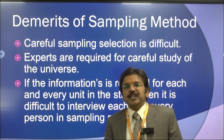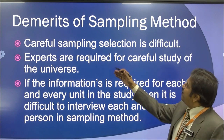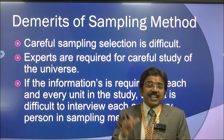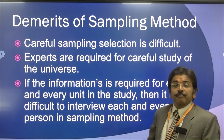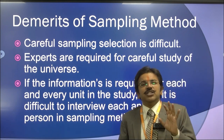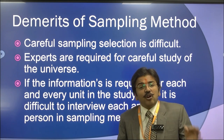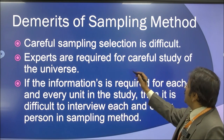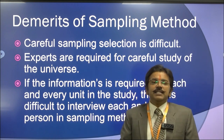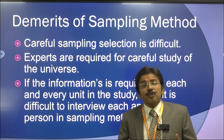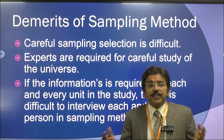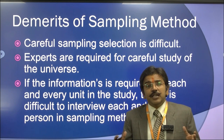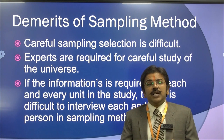Now, the demerits of the sampling method. First, careful sample selection is very difficult — the objectives and assumptions of your study must properly match the sampling method chosen. If you have made assumptions, you go with parametric tests; if not, non-parametric tests are used. Second, experts are required for careful study of the universe — you need someone who can guide you on where to select the sample, how to work on it, what analysis method and statistical tools to apply, and how to interpret and conclude findings.